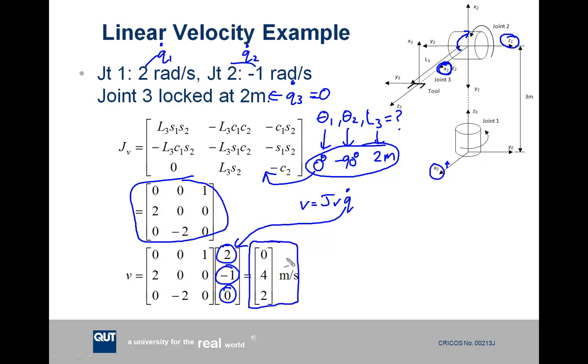And if we multiply this all out, we get our answer. So the velocity of the tool point in the base reference frame is 0 meters in the X0 axis direction, 4 meters in the Y0 direction, and 2 meters in the Z0 direction. And that's our answer.